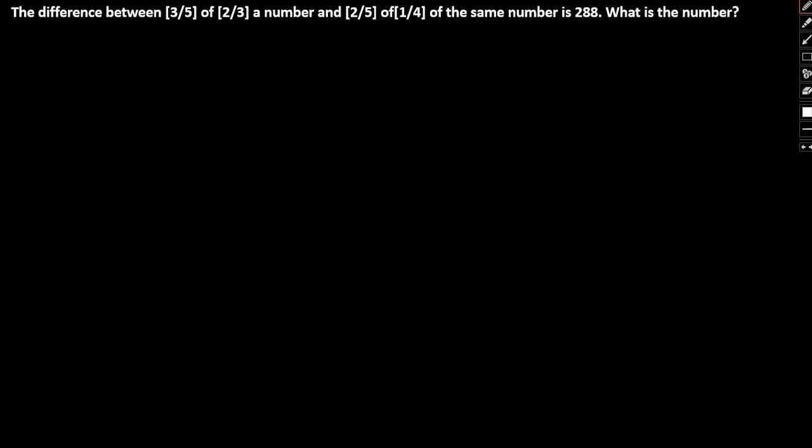Another question pertaining to numbers. The difference between 3/5 of 2/3 of a number and 2/5 of 1/4 of a number is 288. Find the number. So let number equal to x. So therefore 3/5 into 2/3 of x minus 2/5 into 1/4 of x is 288.